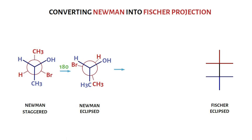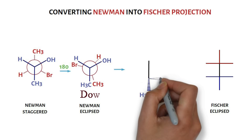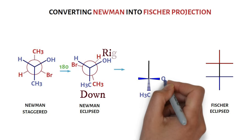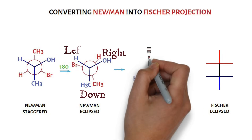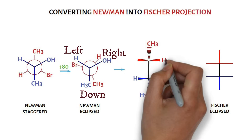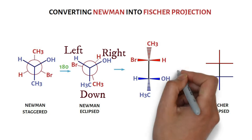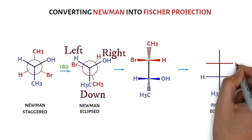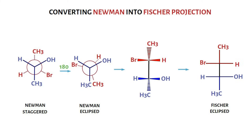This can be converted to a double bow tie. Methyl on the front carbon goes down and is written on dashes; the hydroxyl group appears on the right side and H on the left side. On the back carbon, the methyl goes down and is written on dashes; H appears on the right side and bromine on the left side. This double bow tie is exactly reproduced on the Fischer projection.